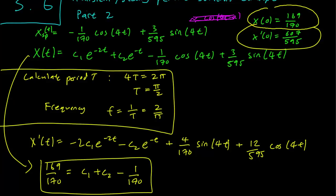And the second equation gets us that x prime is 607/595 when the right hand side is equal to minus 2c1 minus c2 plus 12/595. That's our second equation.